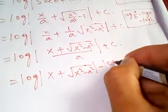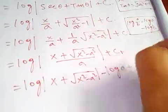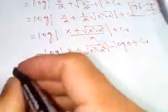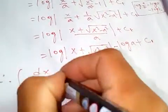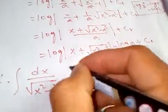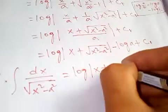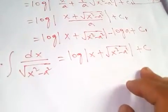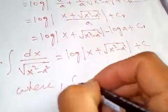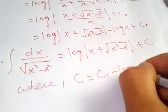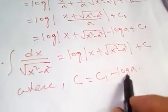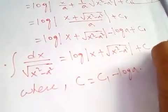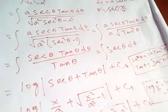This is our final answer: integral of dx over square root of x squared minus a squared equals log of x plus square root of x squared minus a squared, plus constant of integration C. This C is nothing but C₁ minus log a, because it is a constant. We'll see you next time.